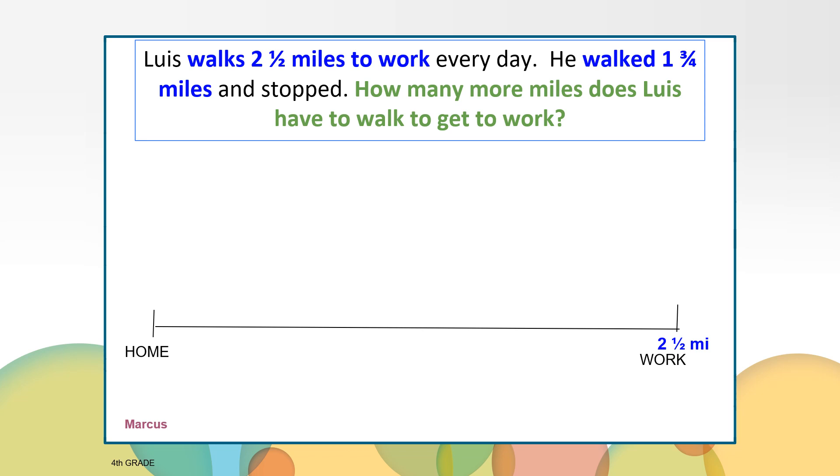Let's look at some different ways students solve this problem. First we'll look at Marcus's solution. Marcus drew a number line showing the distance from home to work as two and a half miles. He then added the stop at one and three fourths miles where Lewis stopped to get his coffee. Marcus knew that he could jump one fourth mile to get to two miles and then he would need to go another half mile to get to work. So one fourth plus one half is the same as one fourth plus two fourths which equals three fourths. Lewis would have to walk three fourths of a mile to get the rest of the way to work.